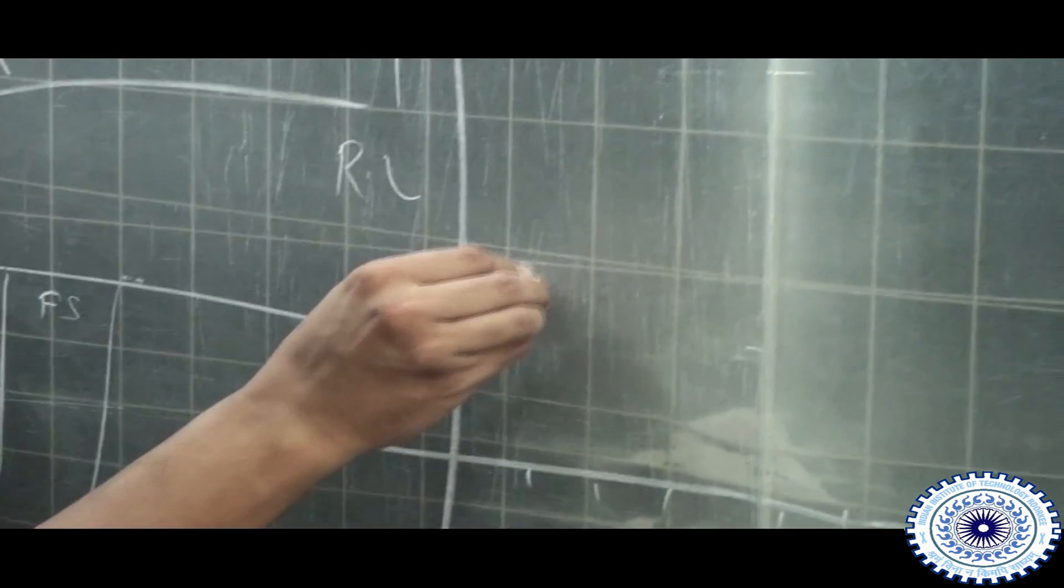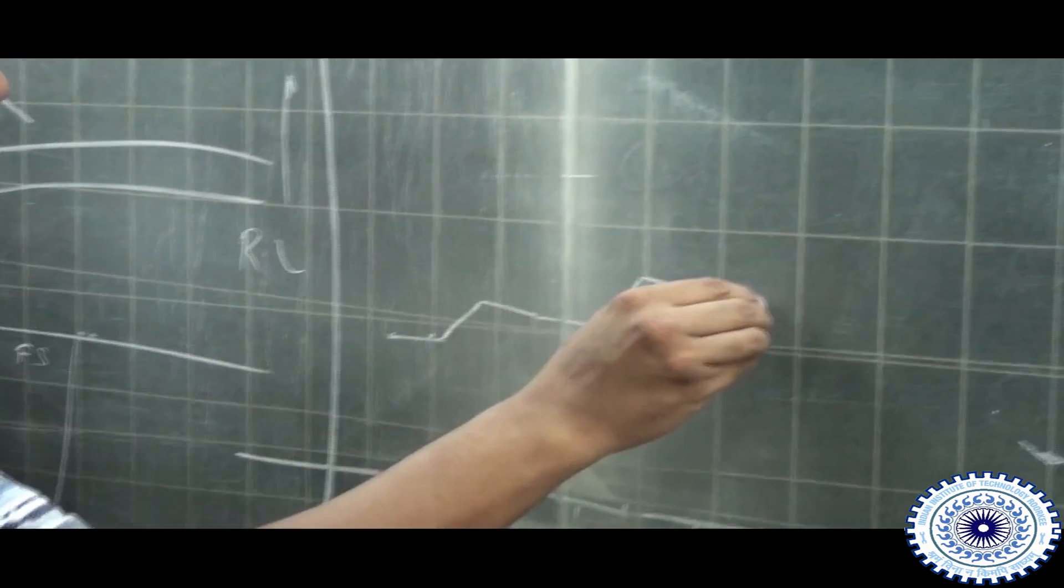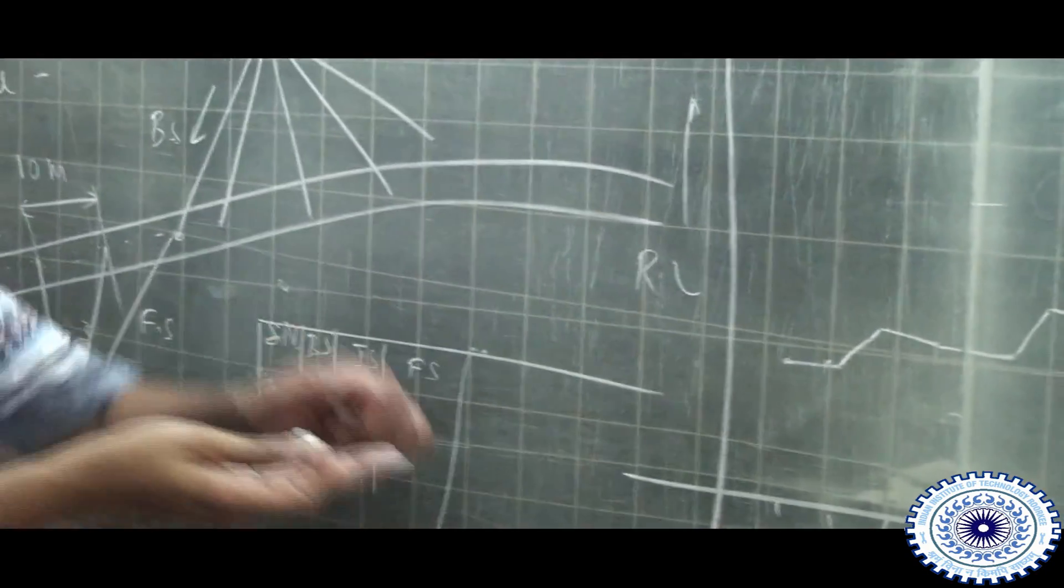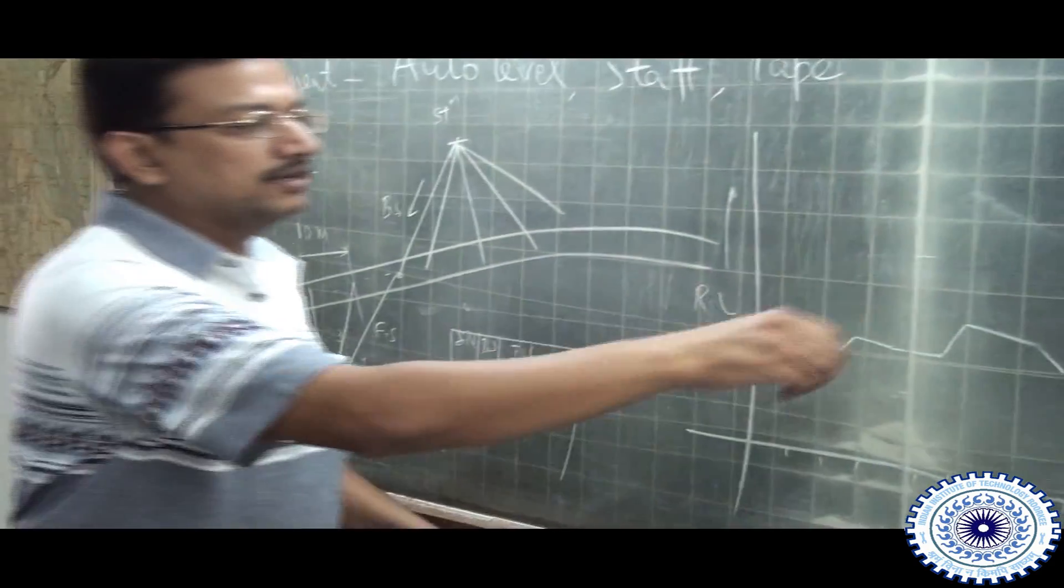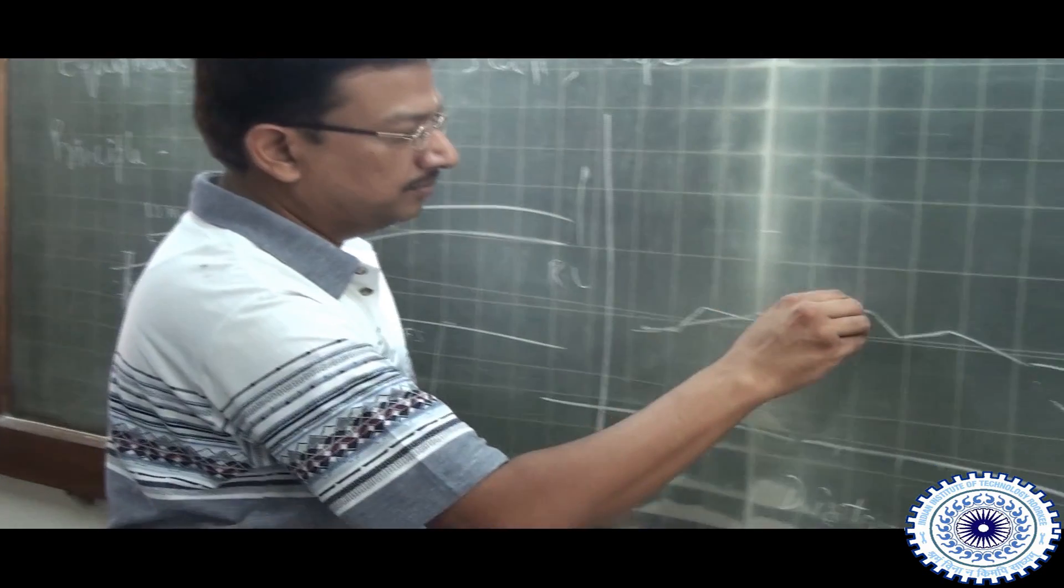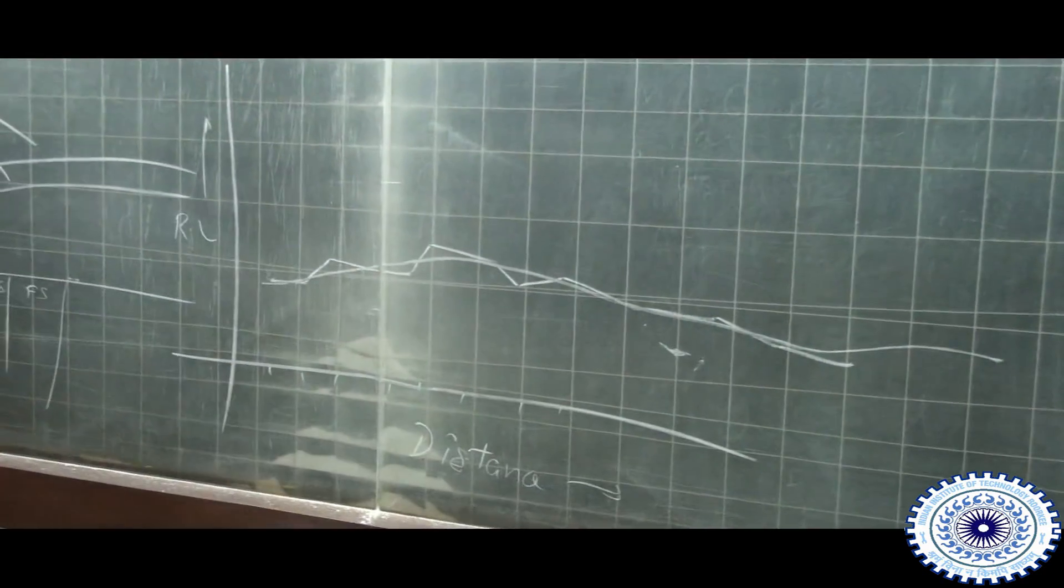At each position, whatever is the RL, you will plot it and get a curve. This will be the profile of the road. Of course, to show vertical exaggeration, I have made it zigzag. The line of the road may be smooth, but it will tell us how the slopes on the road are varying.